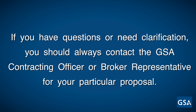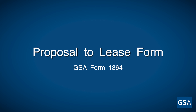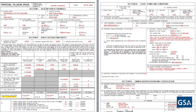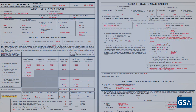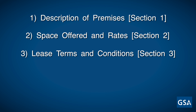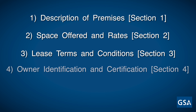Or broker representative for your particular proposal. In this segment, we will discuss the correct way to complete a proposal for lease form, GSA Form 1364, and its attachment, the Lease Proposal Data. A proposal to lease form has four sections: Description of Premises, Section 1; Space Offered and Rates, Section 2; Lease Terms and Conditions, Section 3; and Owner Identification and Certification, Section 4.